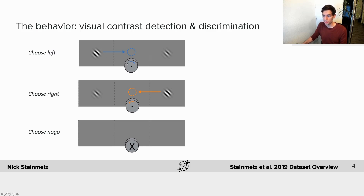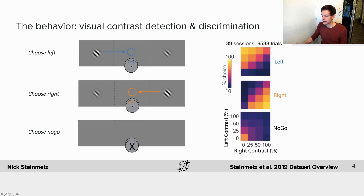The visual stimulus actually moves on the screen as they move the wheel, and their goal is to bring the high-contrast visual stimulus into the central screen. In total there were 16 conditions — low, medium, and high contrast, or no contrast or no stimulus on both sides — giving 16 contrast combinations and three possible responses, representing the complete set of possible behavioral responses the mice could make.